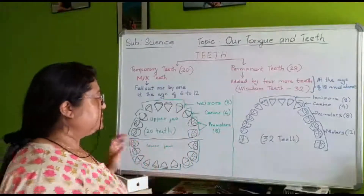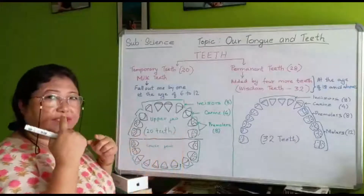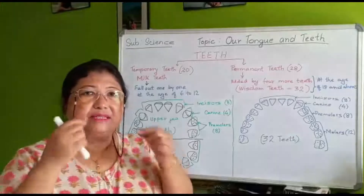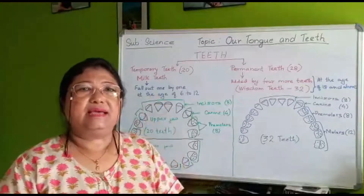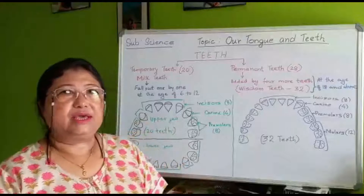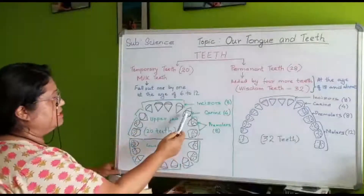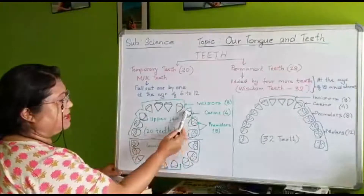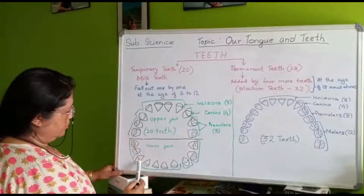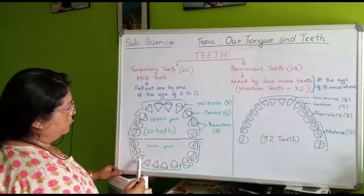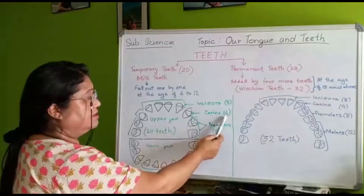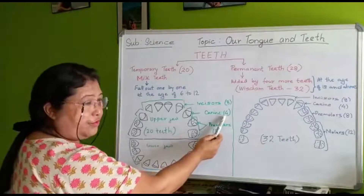At the side of the incisors we have canine teeth. They are quite pointed — in Nepali we call them kukurdat. They are pointed and help in tearing food. See in the picture, they are a little bit pointed. All together we have four canine teeth.